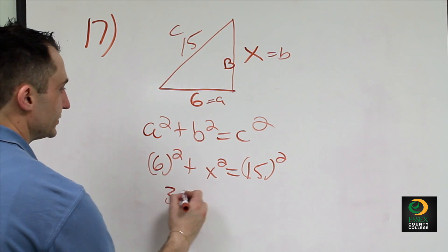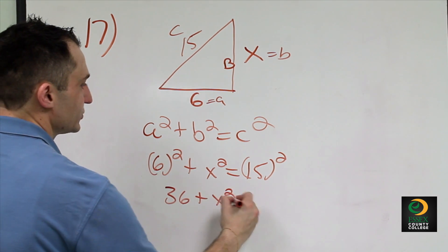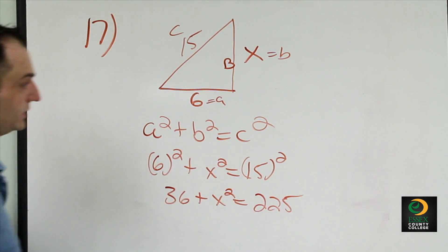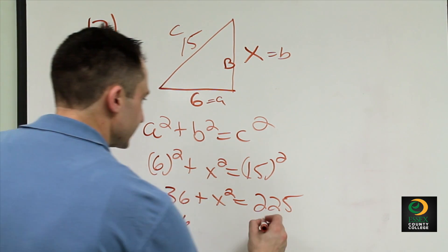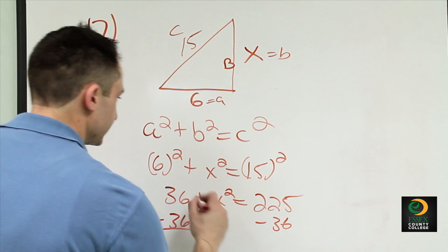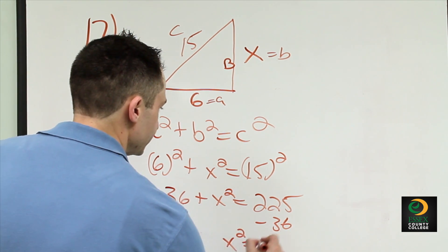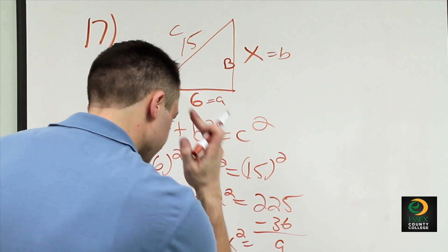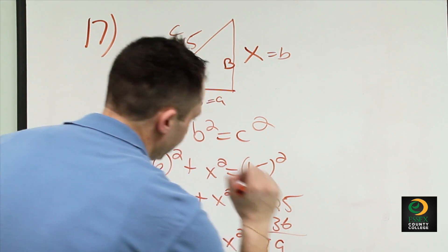So 6 squared is equal to 36 plus x squared is equal to 15 squared is 225. We're going to move the 36 over to the other side minus 36 minus 36. So x squared is equal to 189 basically.